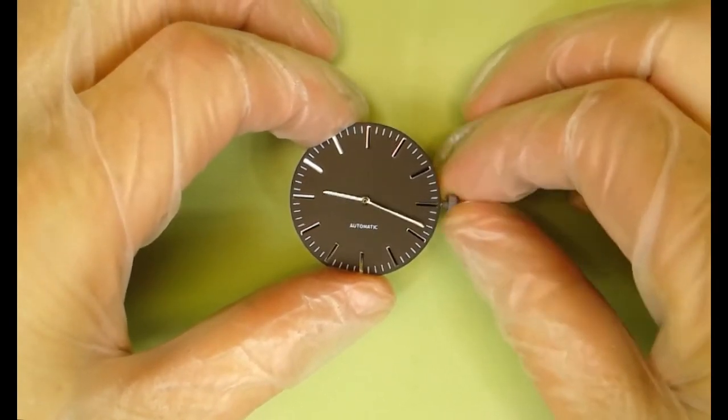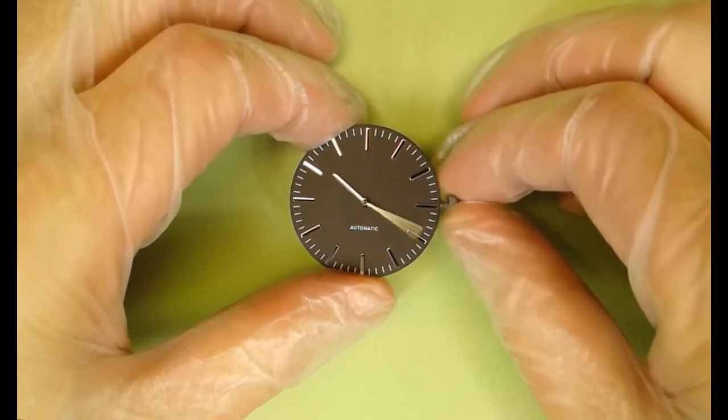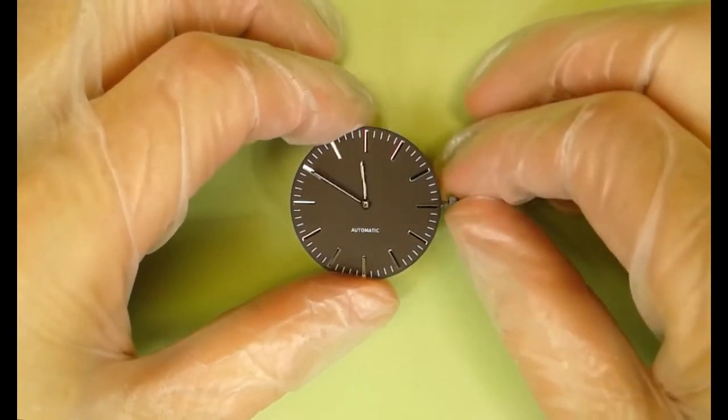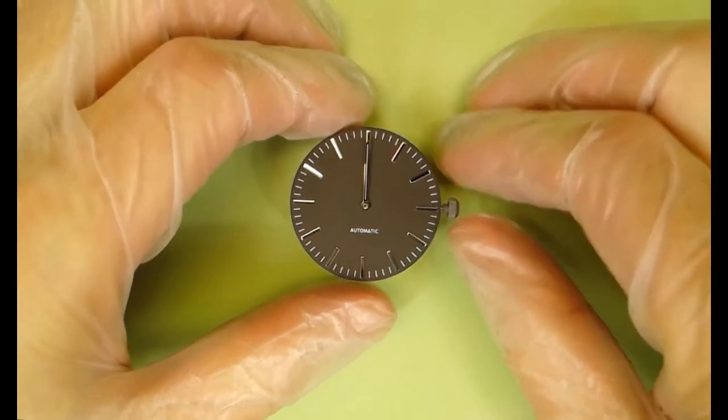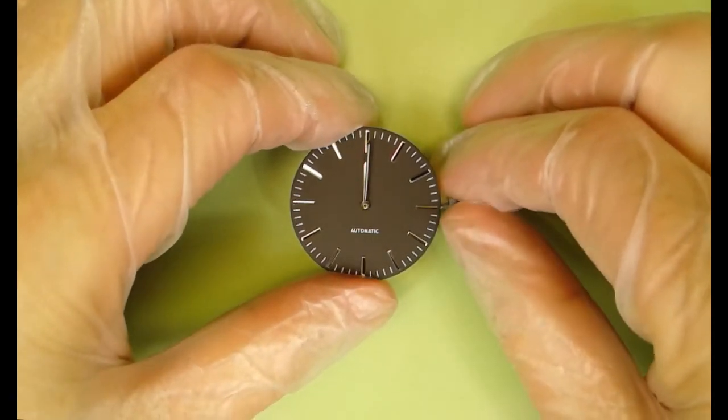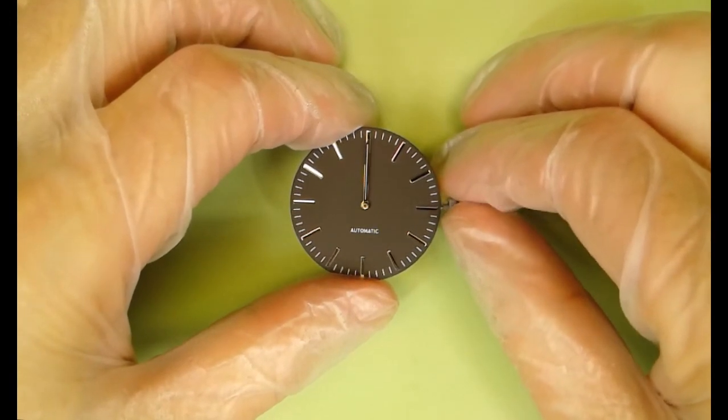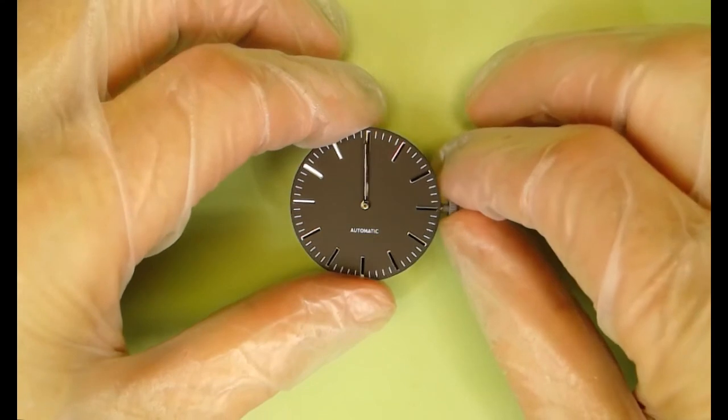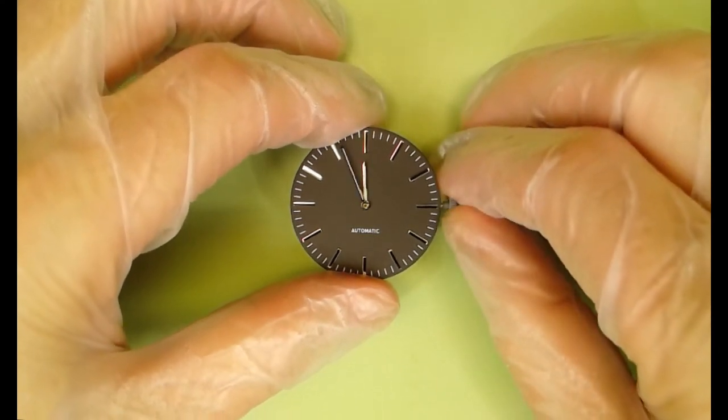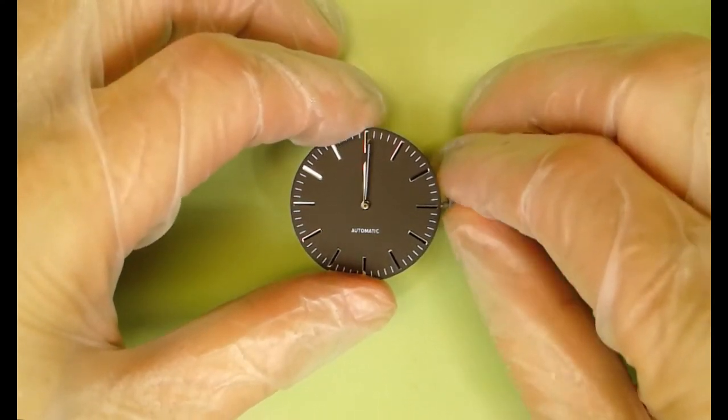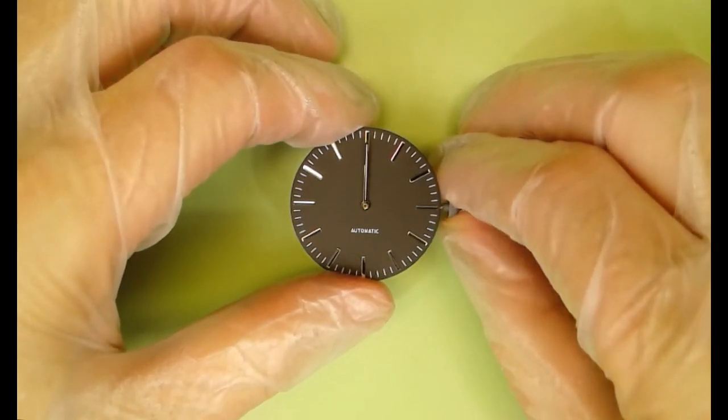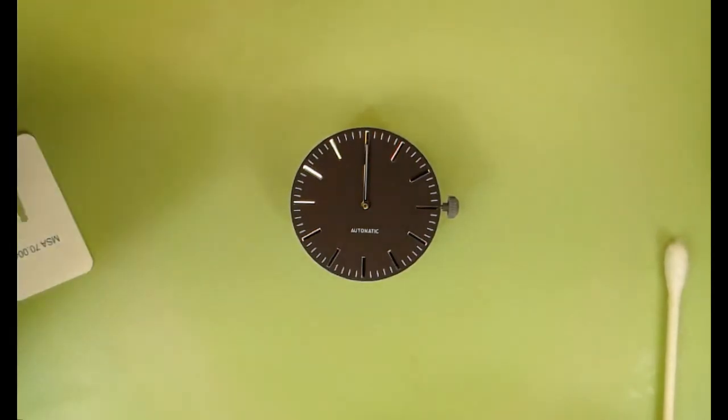And ready to move on to putting on the second hand, which is, you know, the smallest hand. But there's not so much concern about lining it up because it's an automatic watch. The second hand sweeps. Where it's lining up isn't really as big of a concern. It'll sweep past all the markers.